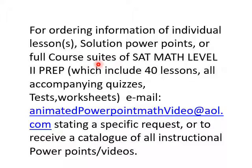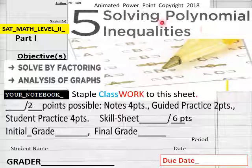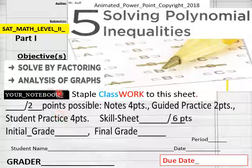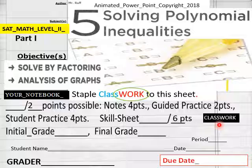Hello everybody, we're getting ready to do Section 5, SAT Math Level 2 Preparation. Section 5 is Solving Polynomial Inequalities. You got two points that go into your notebook, six points into your class worksheet. Name, date, period - students in my classroom, due date is on. For onliners, homeschoolers, put your due date here.